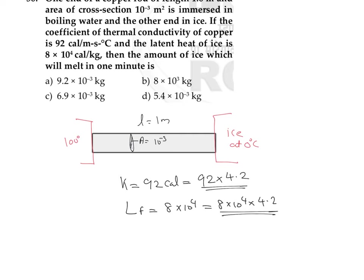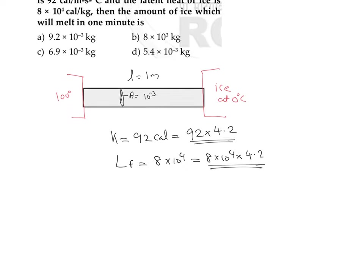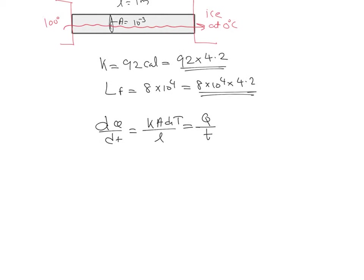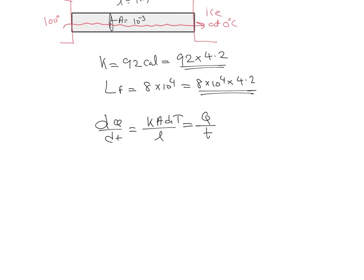First, we find how much heat energy flows through the conductor in one minute, which is 60 seconds. Using the equation dQ/dt = kAΔT/L, in a time t seconds, if Q amount of heat energy flows, we can write Q/t = kAΔT/L, so we solve for Q.